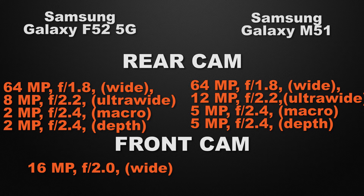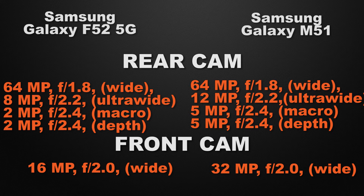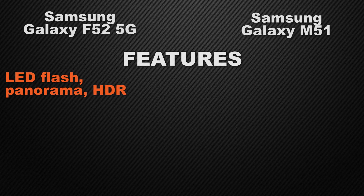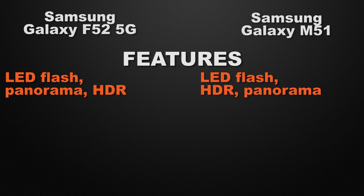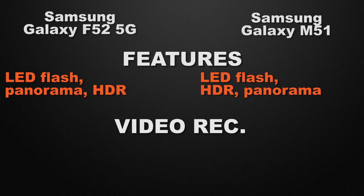About the front camera: the F52 has a 16 megapixel wide camera, whereas the M51 has a 32 megapixel wide camera, so the winner here is M51 because it can take less noisy photos in low light conditions. Regarding camera features, both the F52 and M51 have LED flash, HDR, and panorama, so it's a tie.